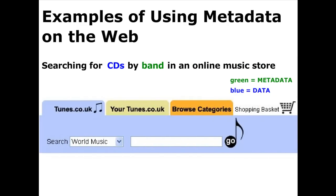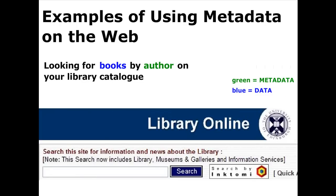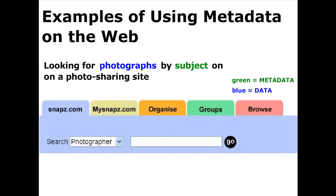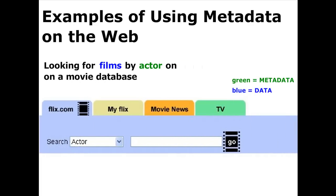Here are some examples of how metadata is used on the web. Metadata helps you to search for CDs by band in an online music store. Metadata helps you to search for books by author on your library catalogue. Metadata helps you to search for photographs by subject on a photo-sharing site. Metadata helps you to look for films by actor on a movie database.